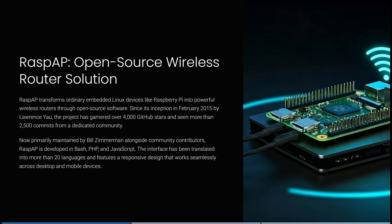Now let's have a look at RASPAP. RASPAP is an open source wireless router solution that transforms ordinary embedded Linux devices like Raspberry Pi into powerful wireless routers through open source software. Since its inception in February 2015 by Lawrence Yu, the project has garnered over 4,000 GitHub stars and seen more than 2,500 commits from a dedicated community. Now primarily maintained by Bill Zimmerman alongside community contributors, RASPAP is developed in Bash, PHP and JavaScript. The interface has been translated into more than 20 languages and features a responsive design that works seamlessly across desktop as well as mobile devices.